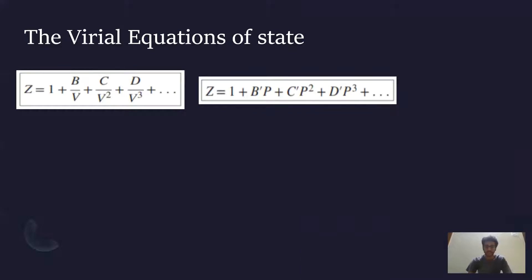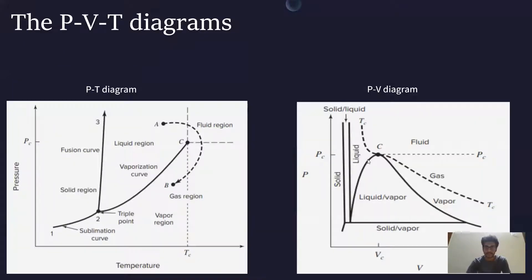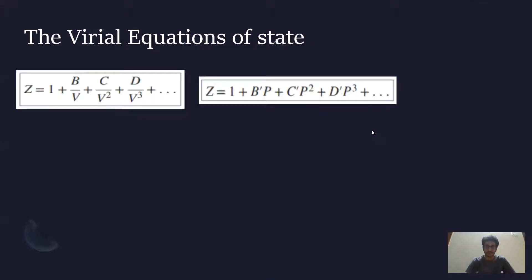Coming to the virial equation of state: it can be seen in the PV diagram that for isotherms at high temperatures, the pressure-volume relationship is quite simple — as pressure increases, volume decreases — such that the product PV is almost constant. This gives rise to the virial equation of state. We express PV as a function of P in the form of a polynomial, and by further simplifying it into the Z form — that is, the compressibility factor — Z equals PV/RT. In the form of Z, we get two equations: one in terms of pressure and the other in terms of volume.